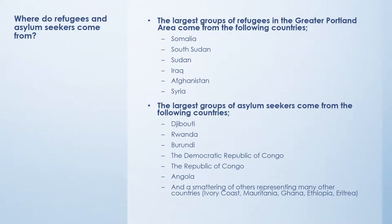In the welcome presentation, we talked about where many of our students come from. The largest groups of refugees in the greater Portland area come from Somalia, Sudan, South Sudan, Iraq, Afghanistan, and Syria. The largest groups of asylum seekers come from Djibouti, Rwanda, Burundi, the Democratic Republic of Congo, the Republic of Congo, and Angola. And there are a smattering of students from many other different countries who are also here seeking asylum.